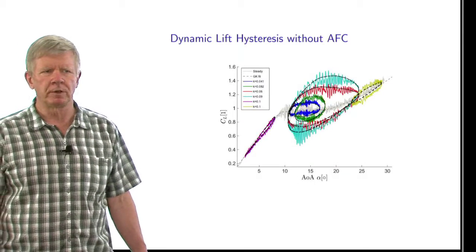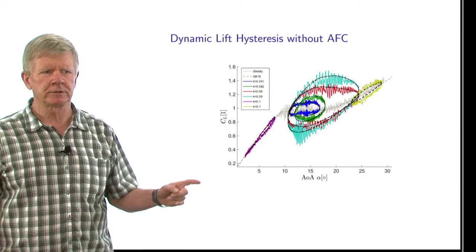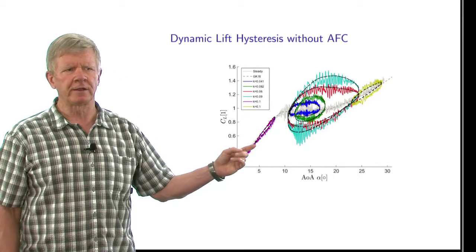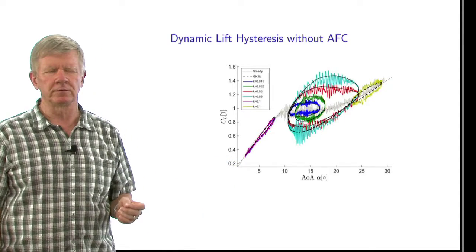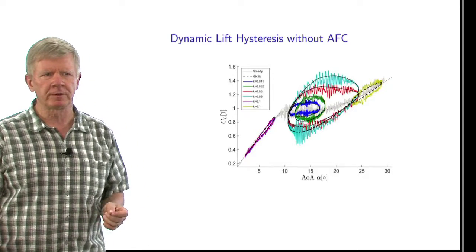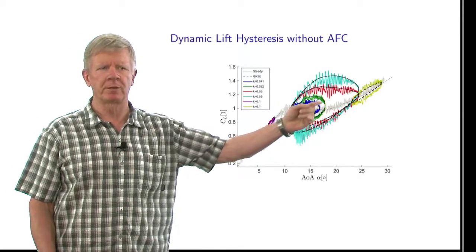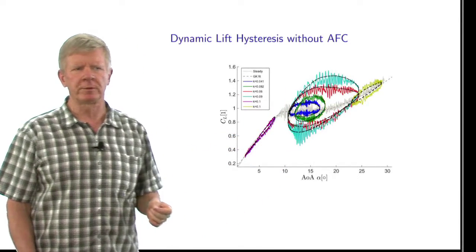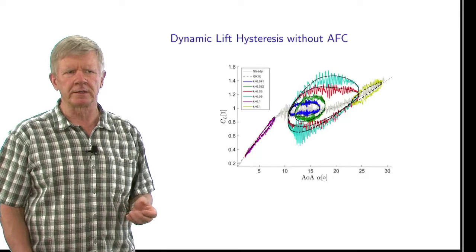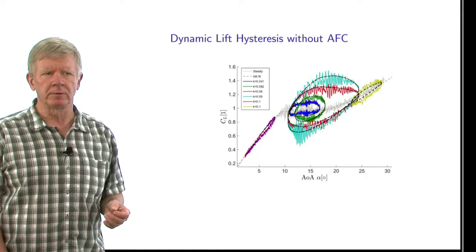So here's an example of what happens to a blade that's pitching. This is a plot of the lift coefficient versus the angle of attack. The gray line shows the standard lift coefficient that you find with steady-state behavior. But when the airfoil is pitching around and moving, you get so-called dynamic hysteresis loops. These different colored loops correspond to different pitching rates and different pitching amplitudes. The point is that you can see that these deviations from the steady-state curve are quite large, and we need to be able to at least know what they are.